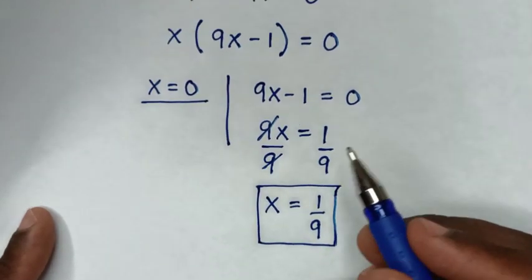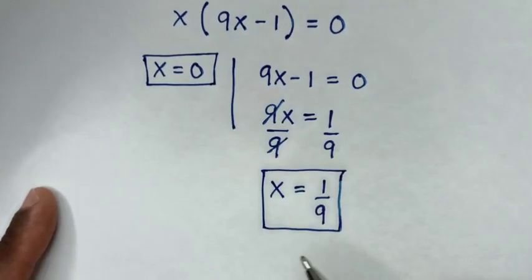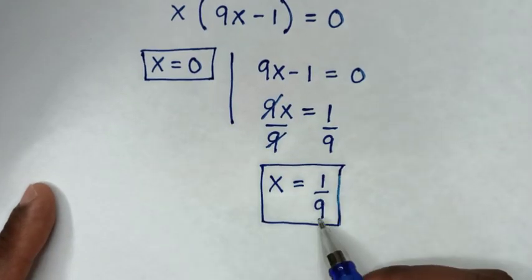Therefore, we have 2 values of x: x is equal to 0 and x is equal to 1 over 9.